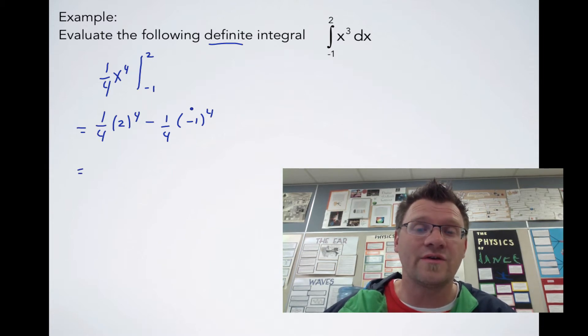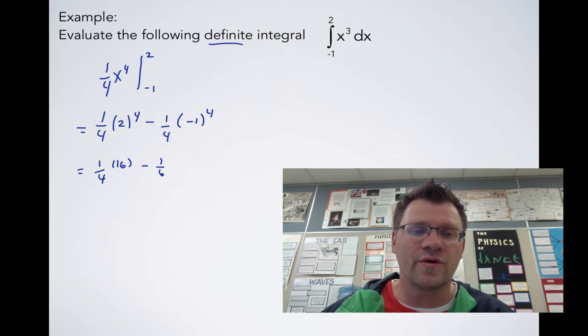Now we evaluate this. This will be the area under the graph of x³ from -1 to 2. We get 1/4 times 2⁴, which is 16, and 1/4 times (-1)⁴, which is just 1.